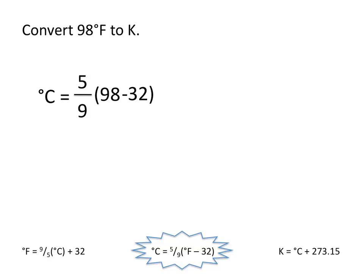Notice that the temperature in Fahrenheit minus 32 is in parentheses, so it's important that you put this into your calculator correctly. This gives us a temperature of 36.7 degrees Celsius.